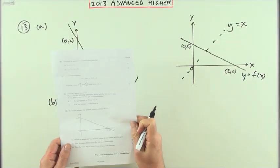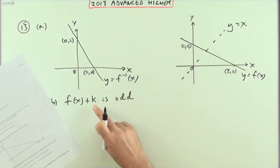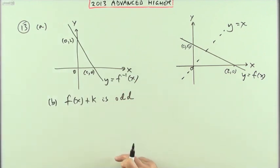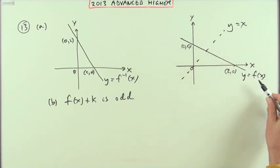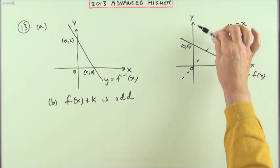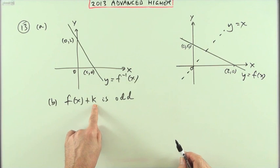In part (b), state the value of k for which f(x) + k is odd. Well, f(x) + k simply means you take this graph y equals f(x) and move it up or down by a certain amount. That amount k - it's acting after the evaluation, it's an addition to the answers.